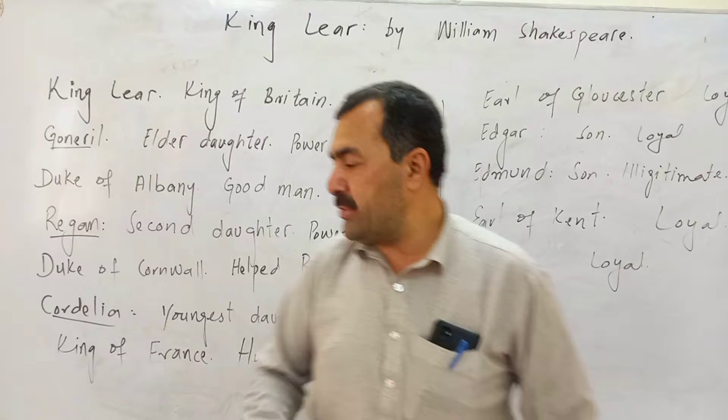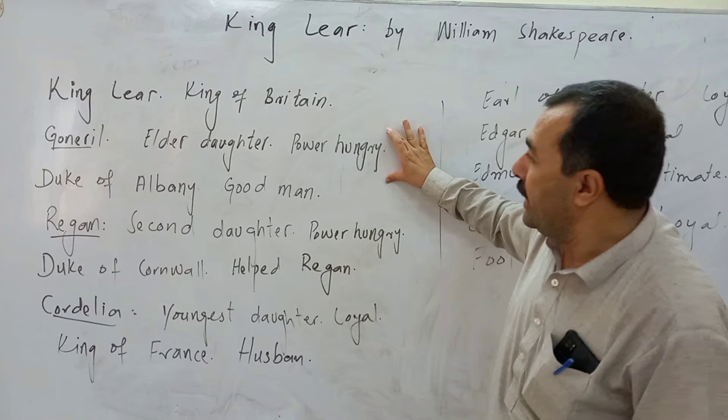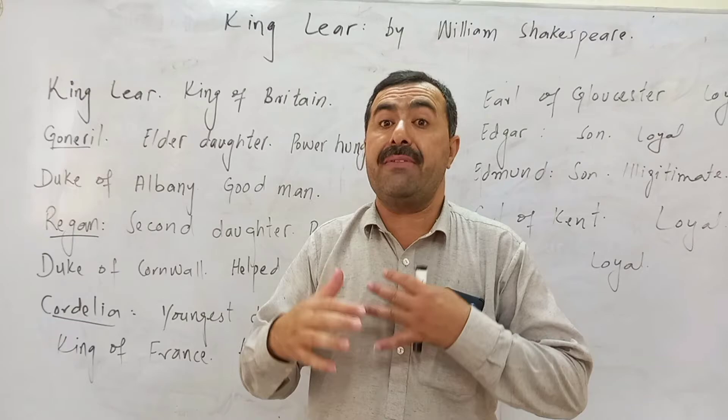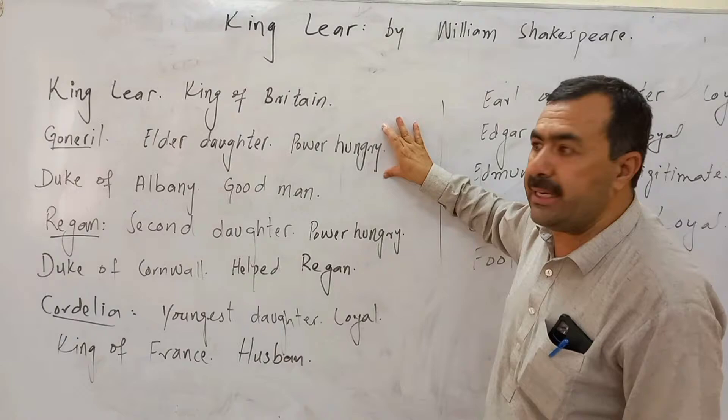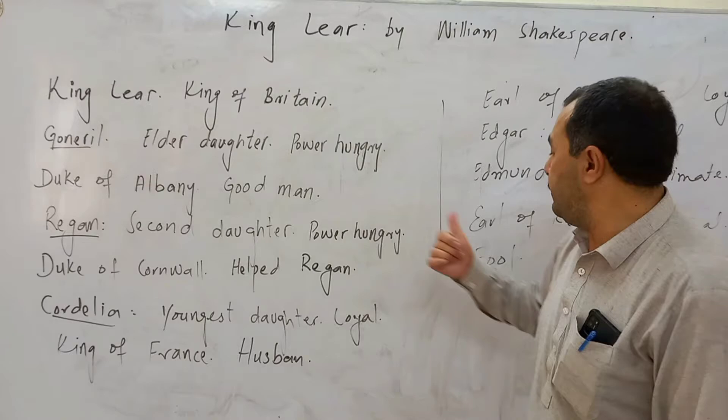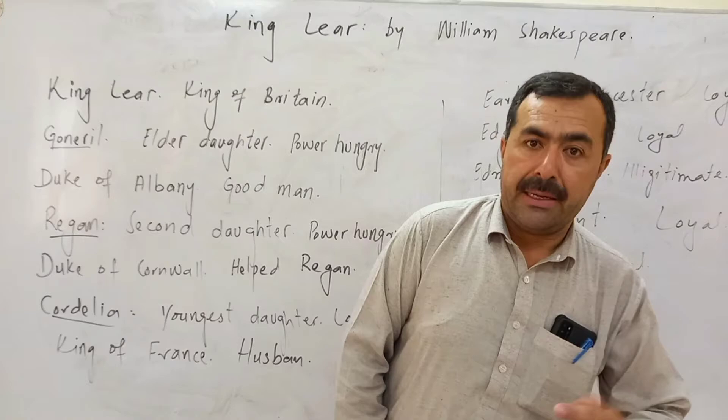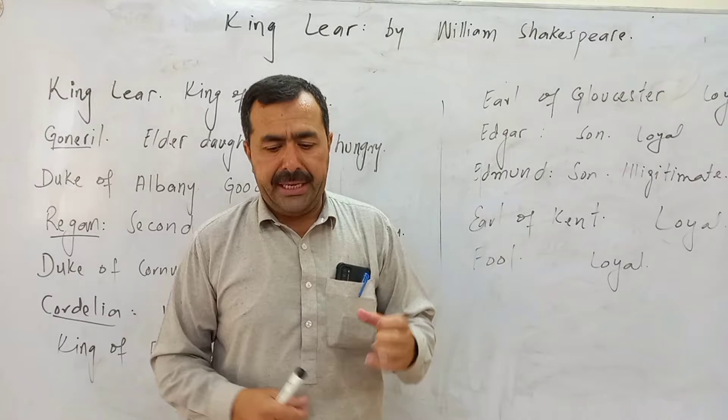Now the king distributes his kingdom between Goneril and Regan on one condition: that he, having become old, will visit them alternately — sometimes he will stay with Goneril and sometimes with Regan — but with the Fool and with a hundred companions. That was the first condition. Next, Act Two.